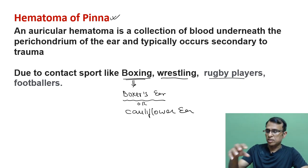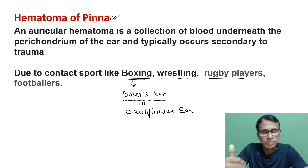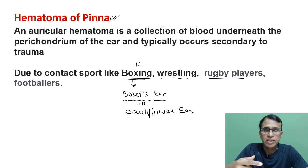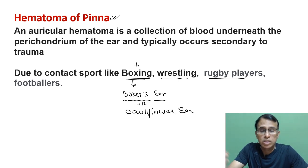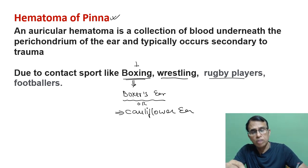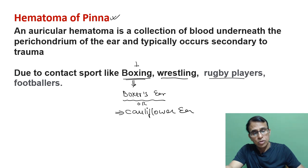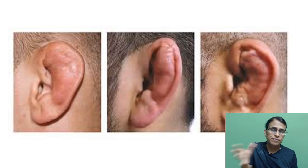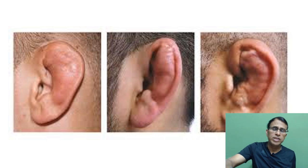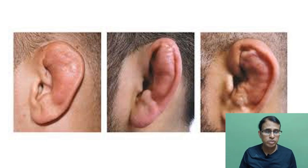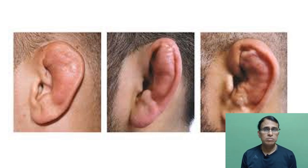Initially there is just acute collection of blood, but because these people are in contact sports and get hit repeatedly, the collection becomes a chronic problem — hematoma on the pinna. The swelling resembles a cauliflower, hence the term 'cauliflower ear.' These images show different presentations of cauliflower ear or hematoma in different persons — obviously it won't look the same in everyone. The condition is otherwise asymptomatic — no pain, no fever.